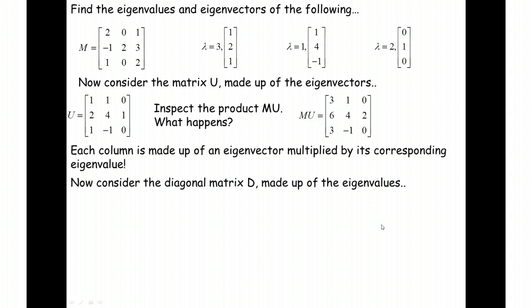What I'd like you to do now is consider the diagonal matrix D, which is just made up of the eigenvalues. So my eigenvalues are 3, 1, and 2. It's important that our eigenvalues stay in that order, and we can form this diagonal matrix here.